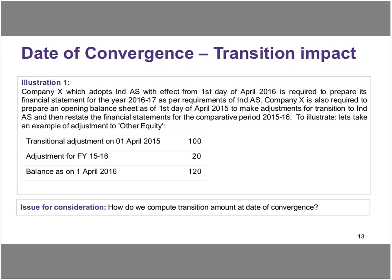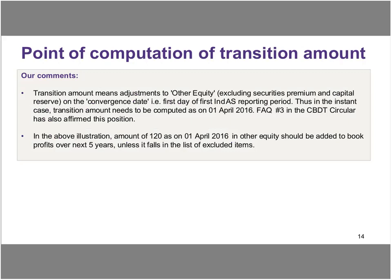In the year 2015-16, which was already reported under Indian GAAP, the company further made adjustments of 20 to comply with Ind AS requirements, and therefore the cumulative impact of these two becomes 120 as of 31st March 2016. That is the end of the comparative period reported under Ind AS. The question comes from the perspective of the MAT circular: what should be considered as the transition amount as per the explanation to subsection 2C of Section 115JB? Is it 120 as of 31st March 2016, or something else as of 1st of April 2016? On slide 14, we depict our view: the transition amount means adjustments to other equity on the convergence date, excluding securities premium and capital reserve. The convergence date is the first day of the Ind AS reporting period, technically 1st of April 2016.